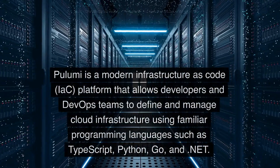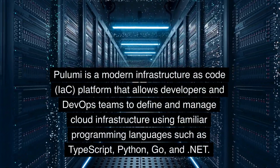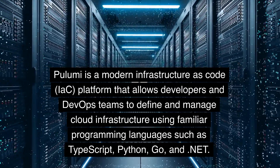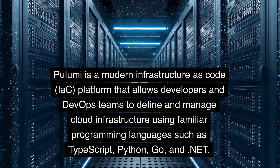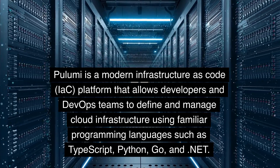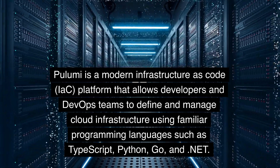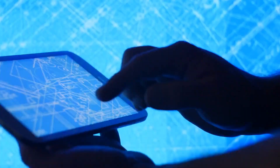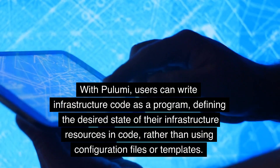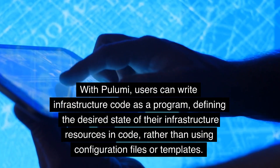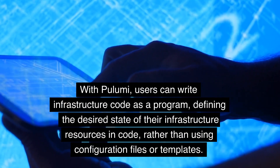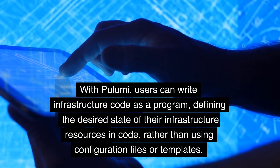What is Pulumi? Pulumi is a modern infrastructure as code (IaC) platform that allows developers and DevOps teams to define and manage cloud infrastructure using familiar programming languages such as TypeScript, Python, Go, and .NET. With Pulumi, users can write infrastructure code as a program, defining the desired state of their infrastructure resources in code, rather than using configuration files or templates.